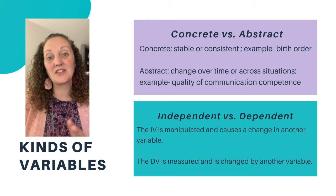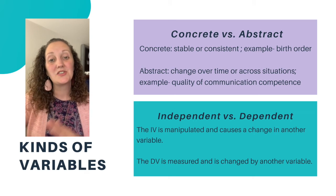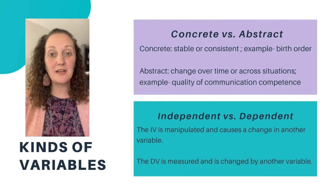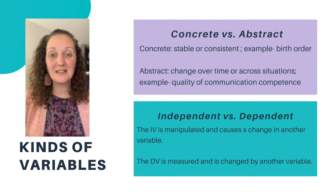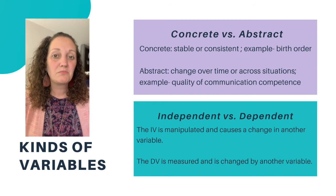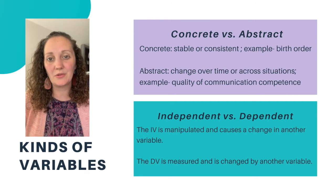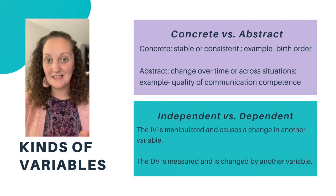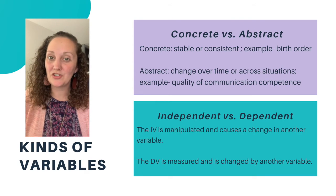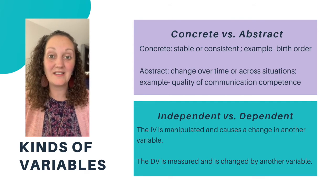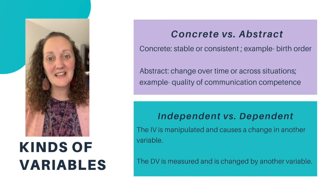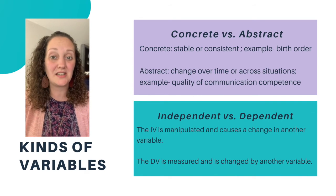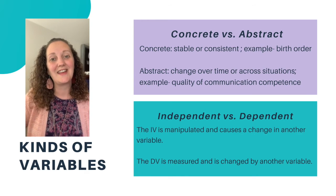Another differentiation to understand is independent versus dependent variables. An independent variable is thought to cause a change in the dependent variable — it is manipulated by the researcher, or sometimes participants place themselves in an independent variable category. The dependent variable is measured and is thought to be changed by the independent variable. In this class, independent variables are often categorical and dependent variables are often continuous.